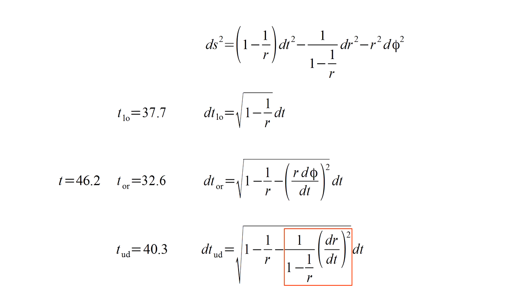The up-down triplet has the 1 minus 1 over r terms and a negative velocity squared term. However, unlike the other two triplets, he doesn't stay at a fixed r coordinate.